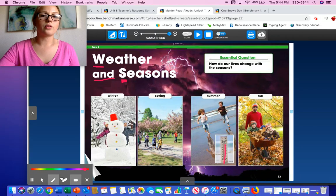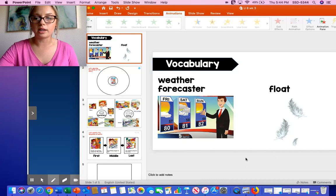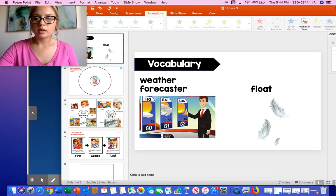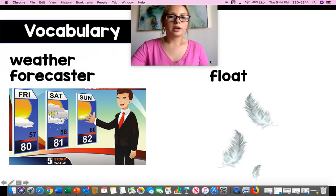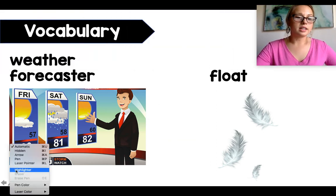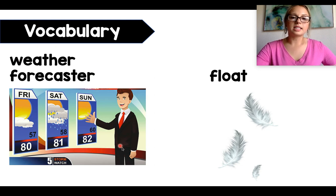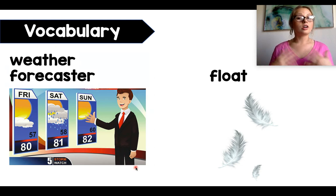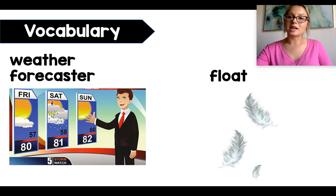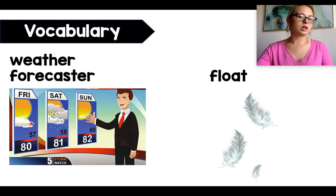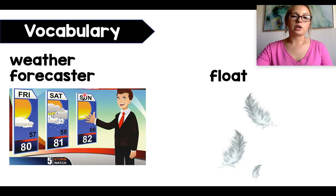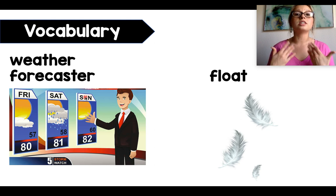Today we're going to read a story together, and before we read, I want to go over some important vocabulary words. The first one is weather forecaster. A weather forecaster is somebody who tells you what the weather's like — it could be a boy or a girl on TV. They tell you: Friday it's going to be partly cloudy, Saturday it's going to be raining, Sunday it's going to be sunny. That's their job — to forecast or tell you the weather.